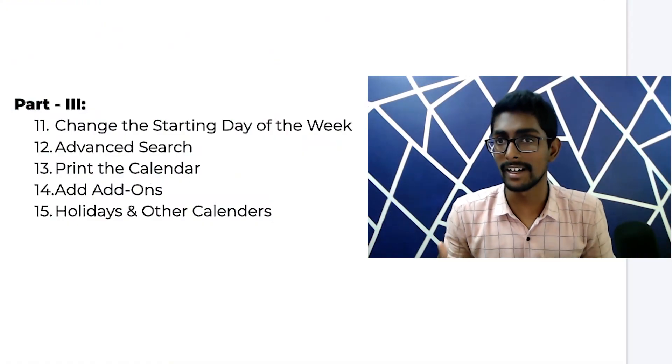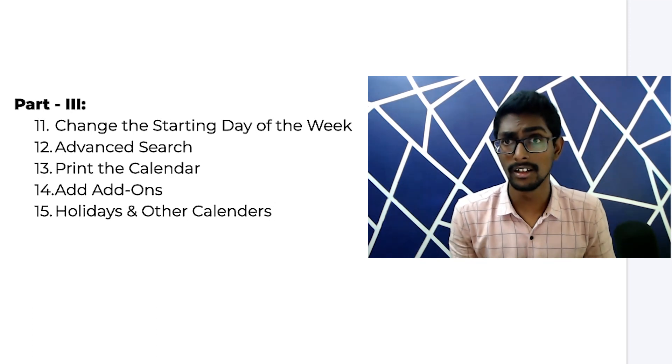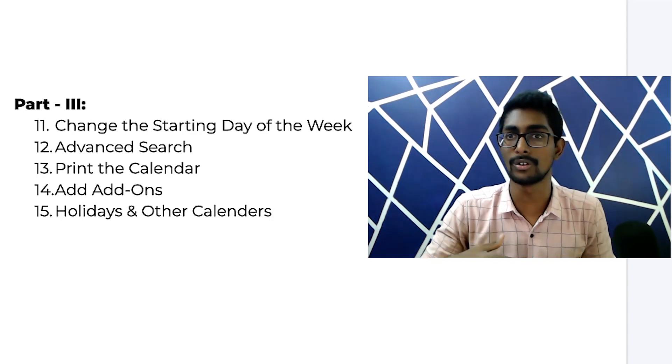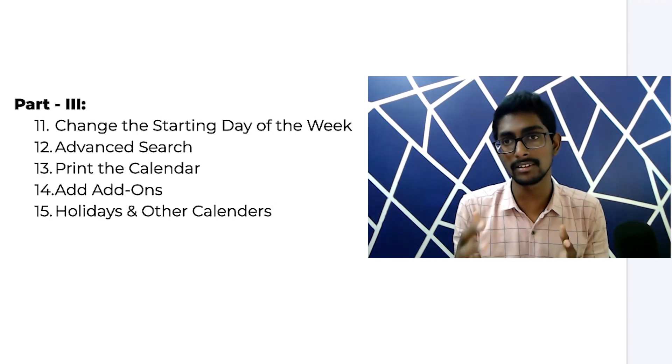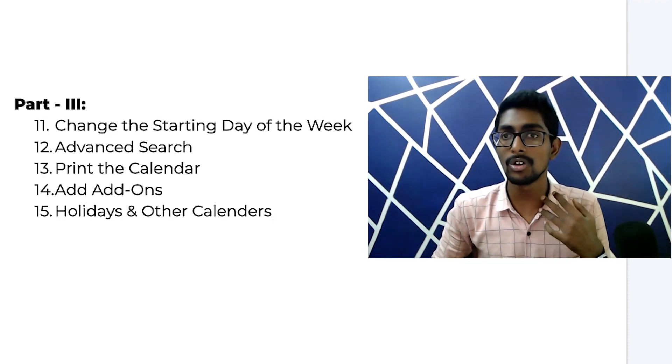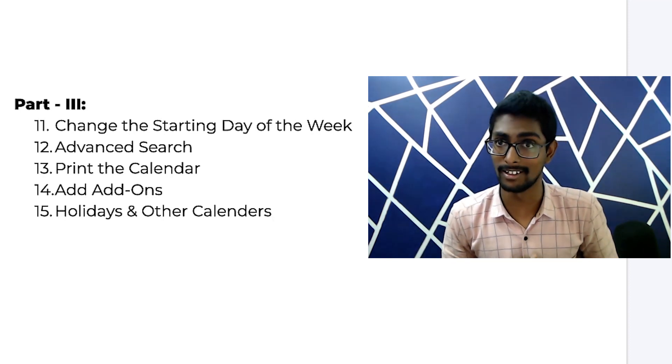Here's a summary of the five tips: First, change the starting day of the week from Sunday to Monday. Second, use advanced search based on your needs. Third, print the calendar and use it on paper. Fourth, use add-ons like Keep Notes, or for business owners use Google Calendar as part of automation — for example, when a task is created, send an email to a team member. Fifth, use holidays and other calendars in your calendar. Please implement all 15 tips across the three parts, wait a week, and see how much your productivity increases.